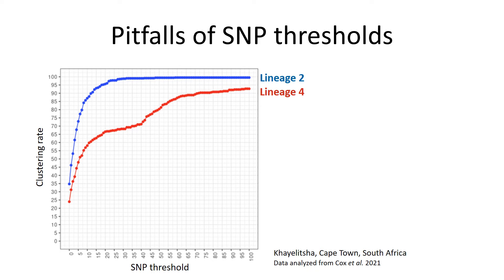I would like to show something very similar from a study we published last year using data from Khayelitsha, Cape Town — a very high incidence setting — analyzing approximately 1,000 genomes. If we apply different SNP thresholds ranging from zero to 100 SNPs and calculate the proportion of samples found in clusters, meaning the proportion considered linked by recent transmission, the results vary greatly depending on the threshold. There is a continuum — no clear step or jump that cleanly separates recent from older transmission — making it very difficult to choose a SNP threshold.